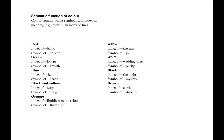We can trace a symbol back to its index. Red — index of blood, symbol of passion. Green — index of foliage, symbol of growth. Blue — index of sky, symbol of peace. Black and yellow — index of wasp, symbol of danger. Orange — index of Buddhist monk's robes, symbol of Buddhism. Yellow — index of the sun, symbol of joy. White — index of wedding dress, symbol of purity. Black — index of the night, symbol of mystery. Brown — index of earth, symbol of stability.